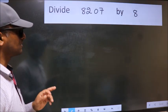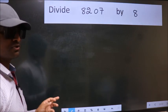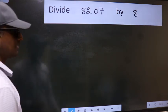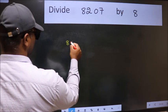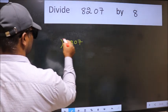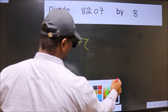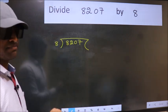Divide 8207 by 8. To do this division, we should frame it in this way. 8207 here, 8 here. This is your step 1.